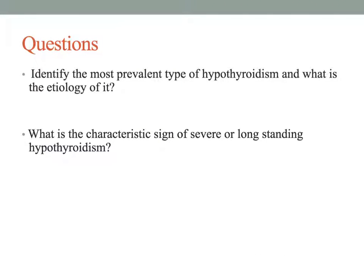These are some questions to check your learning. Hashimoto's thyroiditis is the most prevalent type of hypothyroidism and is an autoimmune disorder. The characteristic sign of severe or long-standing hypothyroidism is myxedema. Most tissues and organs are affected by the low metabolic rate; cellular energy is decreased and metabolites — compounds of proteins and sugars — build up inside the cells, causing a non-pitting edema called myxedema especially around the eyes, hands, feet, and between the shoulder blades. The tongue thickens and edema in the larynx makes the voice husky.